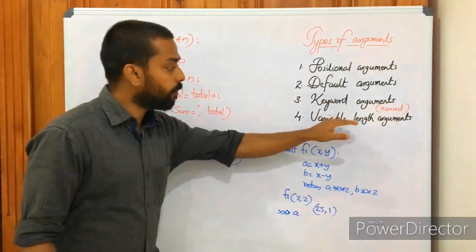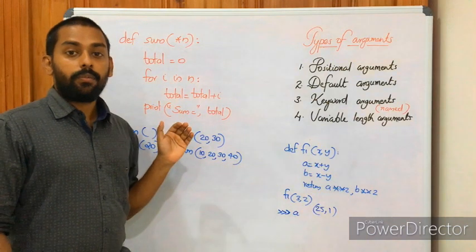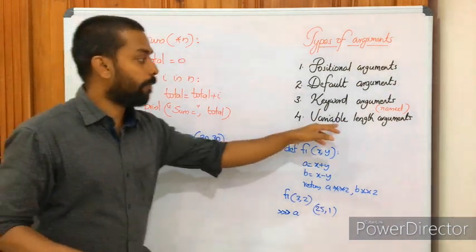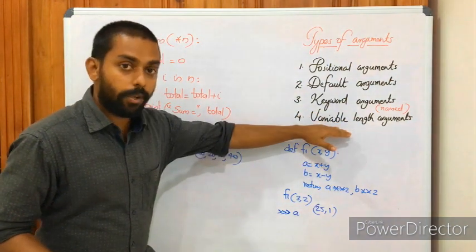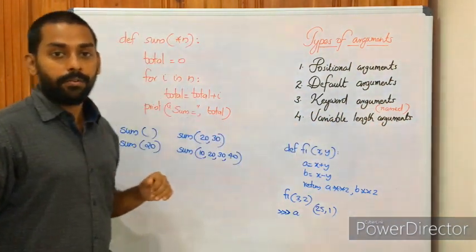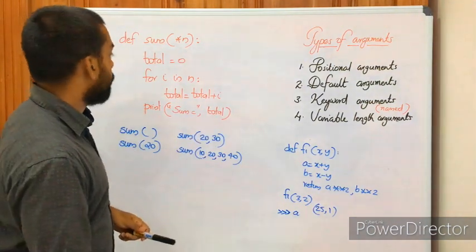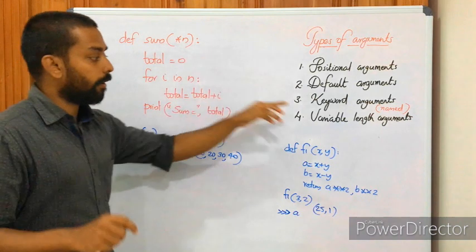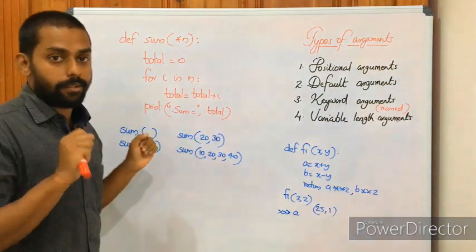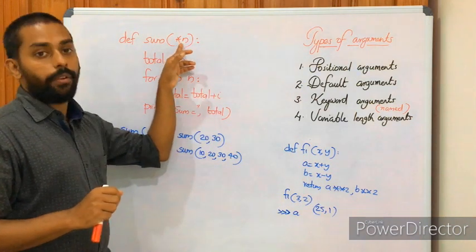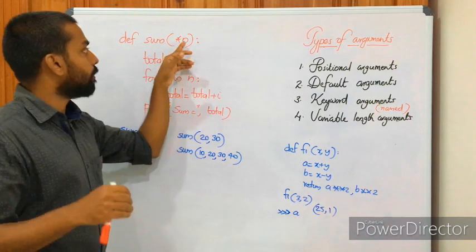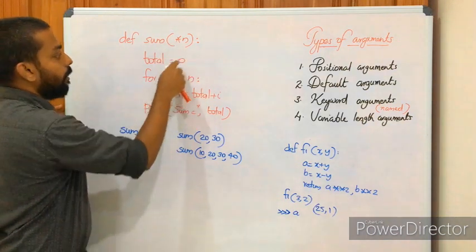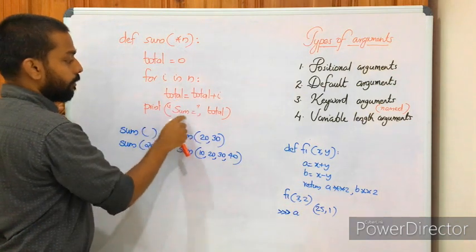Our next type is variable length arguments. In some situations we have to pass a variable number of arguments to a function — that's called variable length arguments. We implement the concept of variable length arguments using an asterisk sign. The asterisk has to precede the variable identifier or parameter. Example: def sum_of(*n), total=0, for i in n: total = total + i, print('sum =', total).